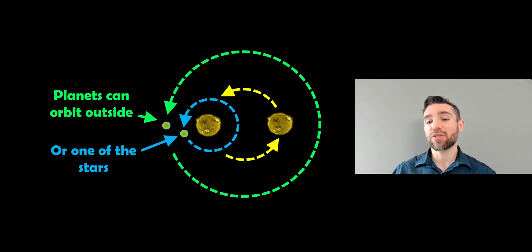But firstly, to consider the different sorts of orbits. So you can have a planet that orbits around the outside of a binary system, which is the green orbit. Or you can have a planet that orbits around one of the stars, and then the two stars orbit their common centre of mass.